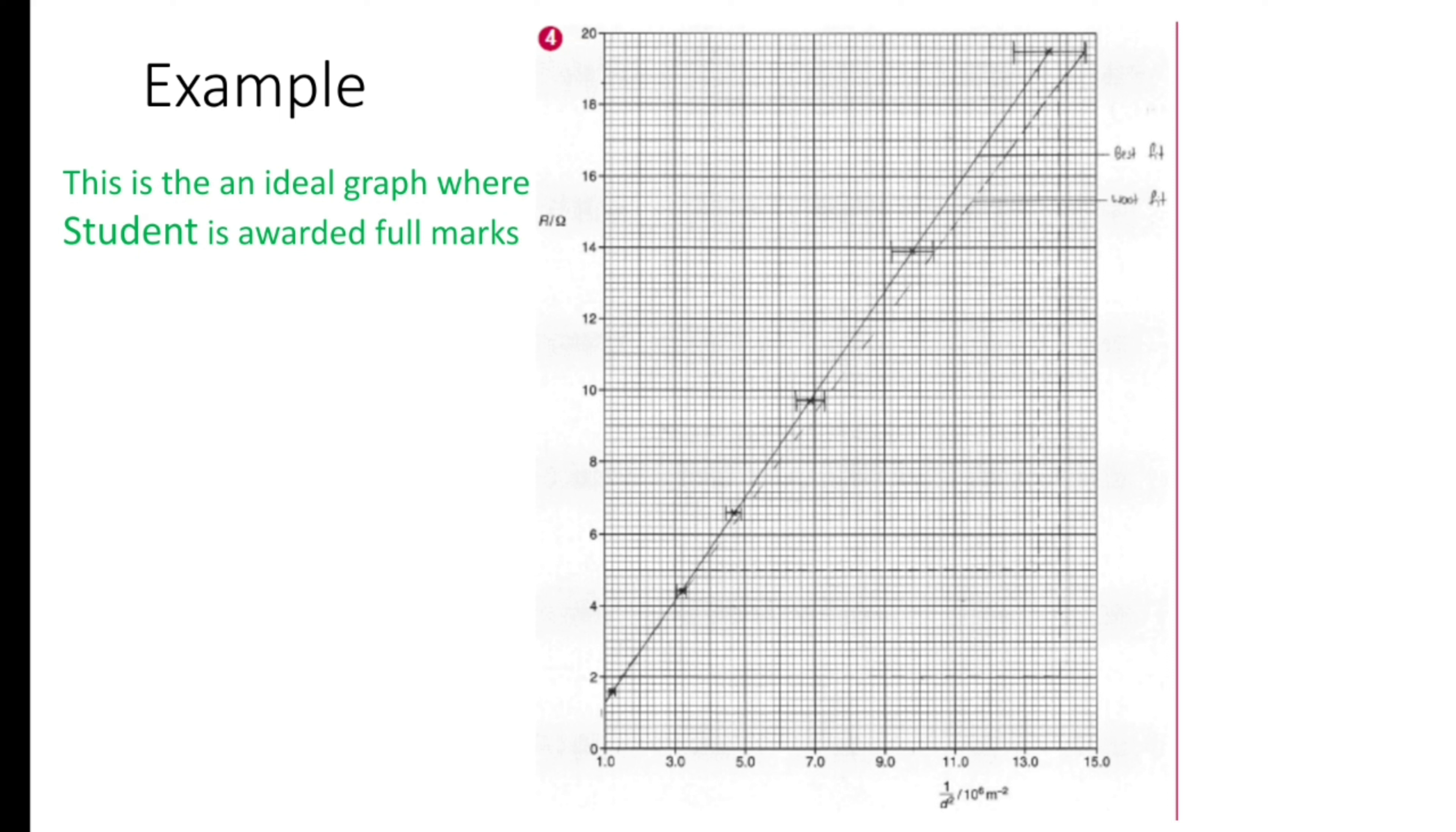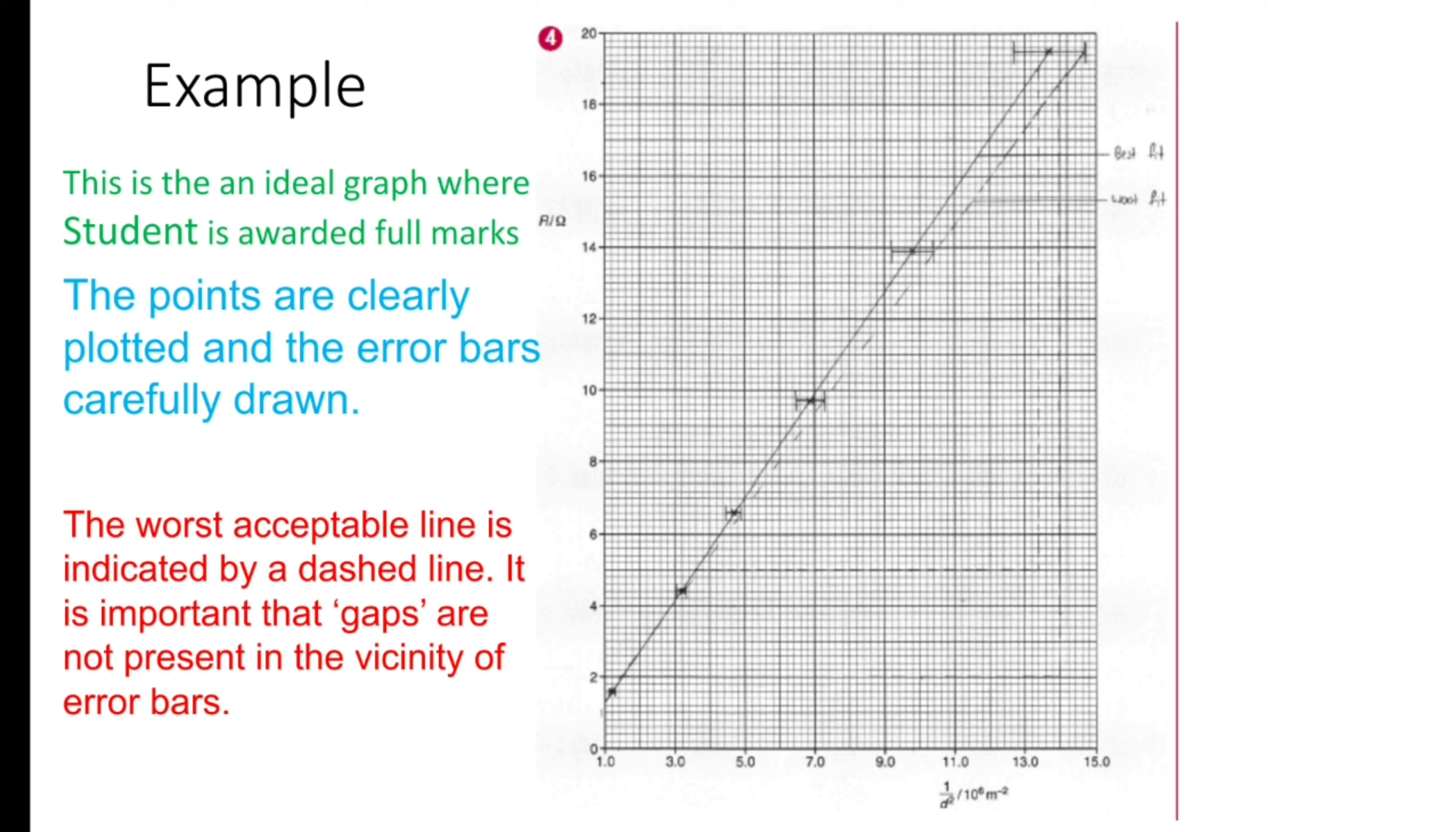Axis is shown correctly. Error bars correctly shown. The points are clearly plotted and the error bars carefully drawn. The worst acceptable line is indicated by a dashed line. It is important that gaps are not present in the vicinity of error bars.